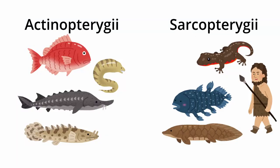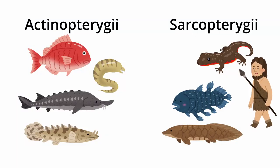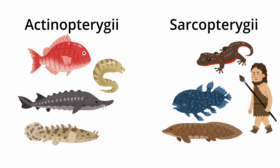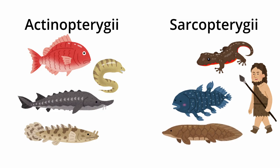We are categorized into the Sarcopterygians. The reason why fish classification is really confusing is that lungfish and coelacanths look like fish, but they are actually closely related to our lineage — the Sarcopterygians.